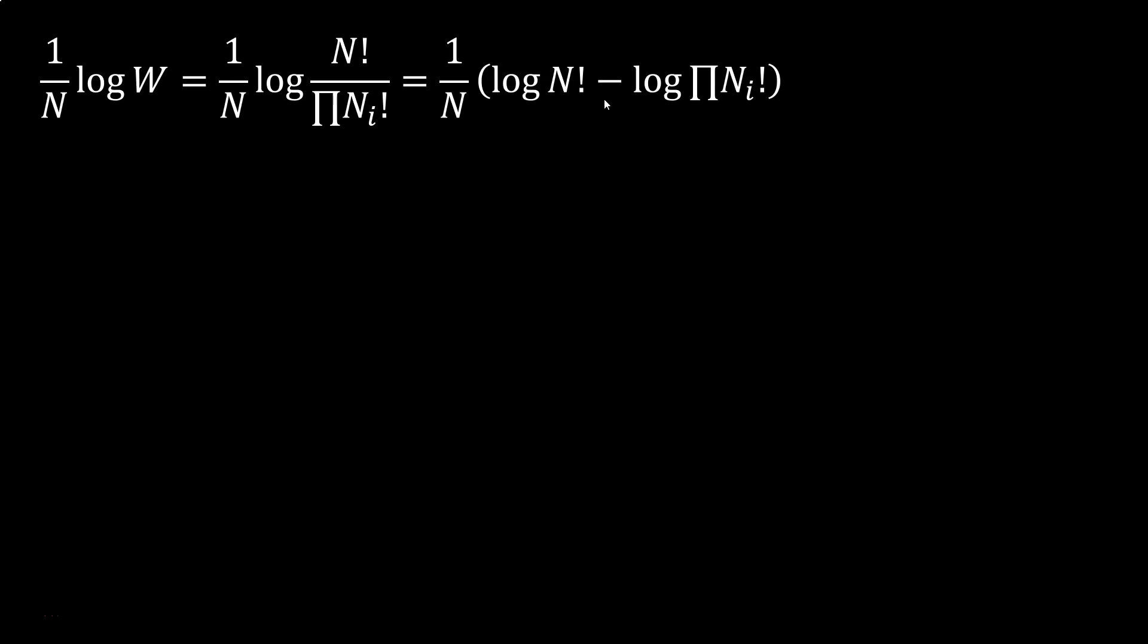Now we want to see what happens when N is large. In that case, we can use the following approximation. Natural log of N factorial is about N natural log of N minus N. Now the expression is only valid for the natural log, so let's call the basis b of the log and change it to natural log. Also, the product within the log becomes the sum of the log.